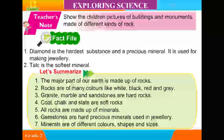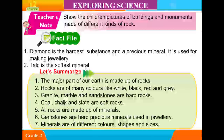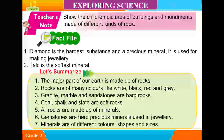Let's summarize: 1. The major part of our earth is made up of rocks. 2. Rocks are of many colors like white, black, red, and gray. 3. Granite, marble, and sandstone are hard rocks. 4. Coal, chalk, and slate are soft rocks. 5. All rocks are made up of minerals. 6. Gemstones are hard precious minerals used in jewelry. 7. Minerals are of different colors, shapes, and sizes.